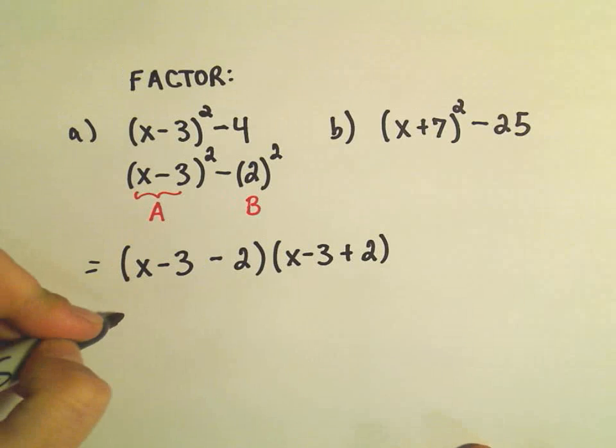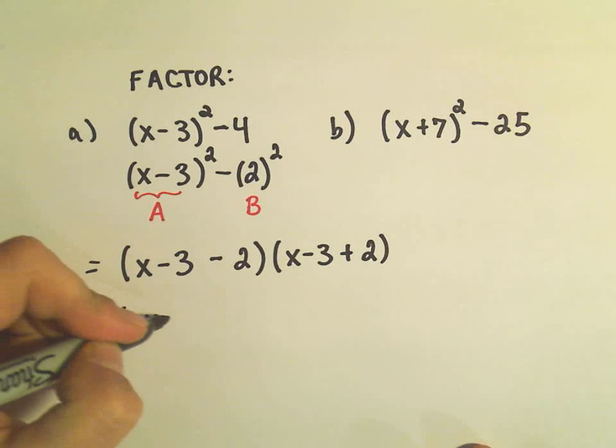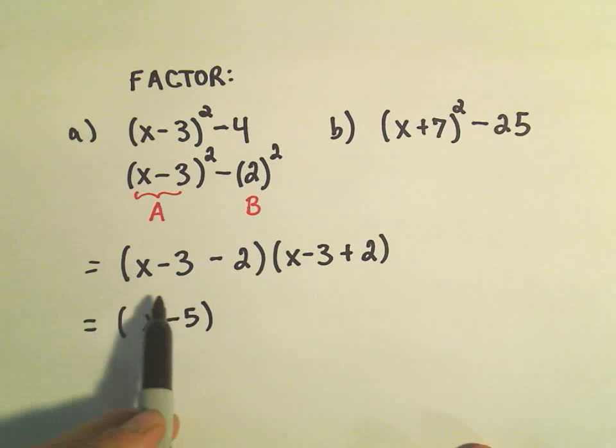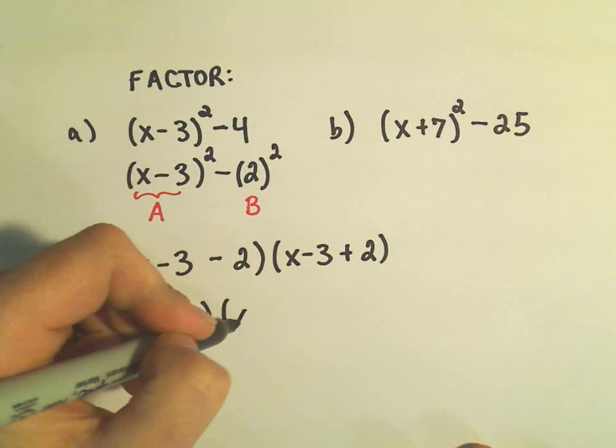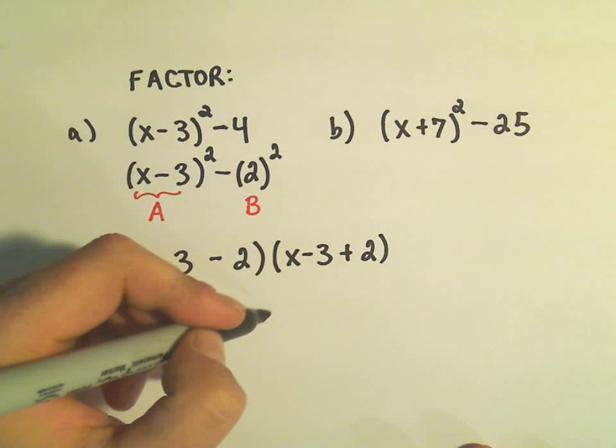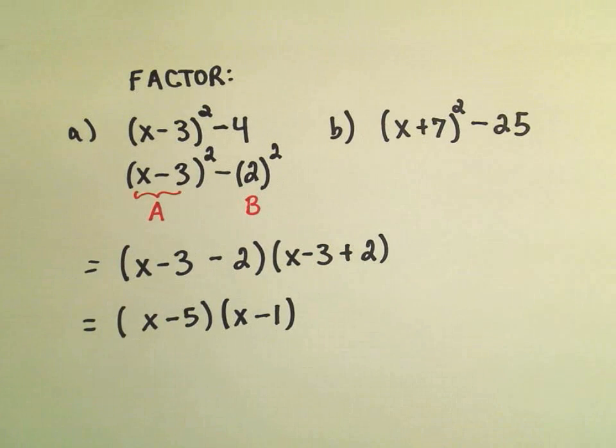If we simplify this down and collect like terms, we'll simply get x minus 5 in the first set of parentheses, and then we'll get x minus 1 in the second set of parentheses. And now we have it factored.